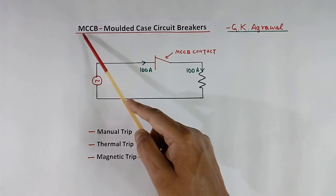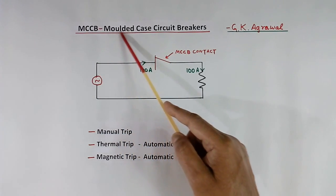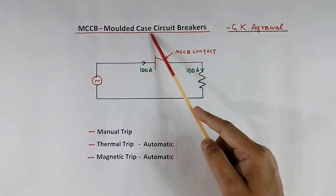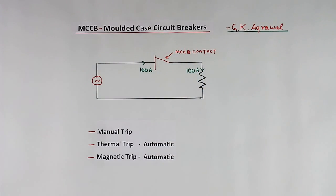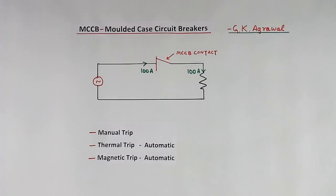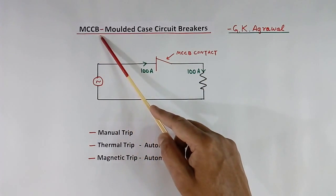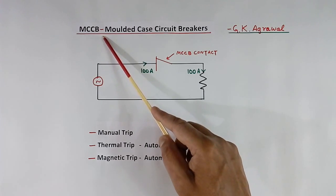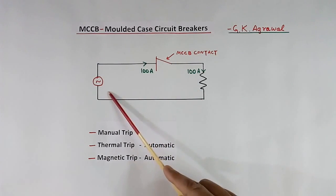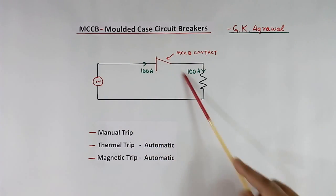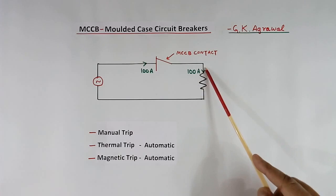Today I will explain about MCCB, molded case circuit breakers. The MCCB main purpose is to protect the circuit or system from over current.